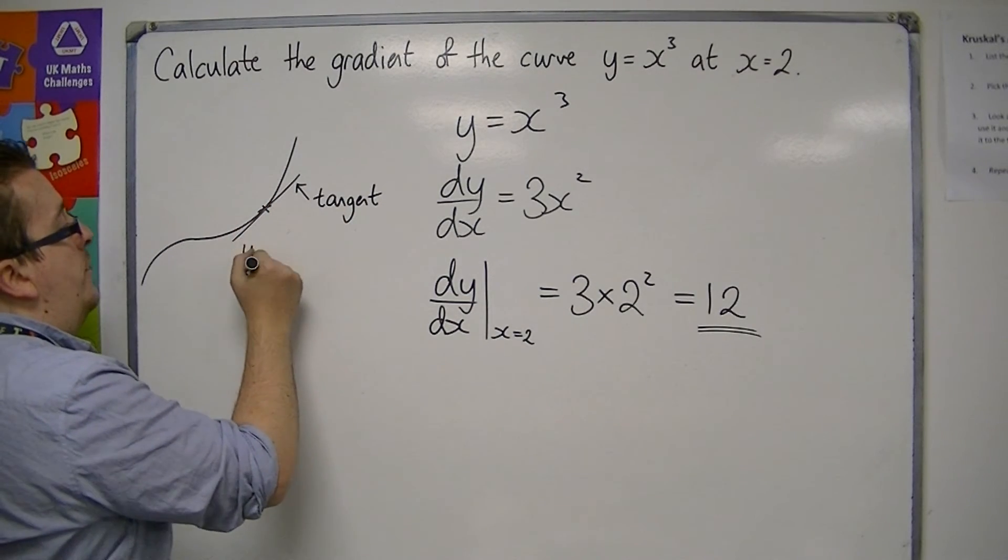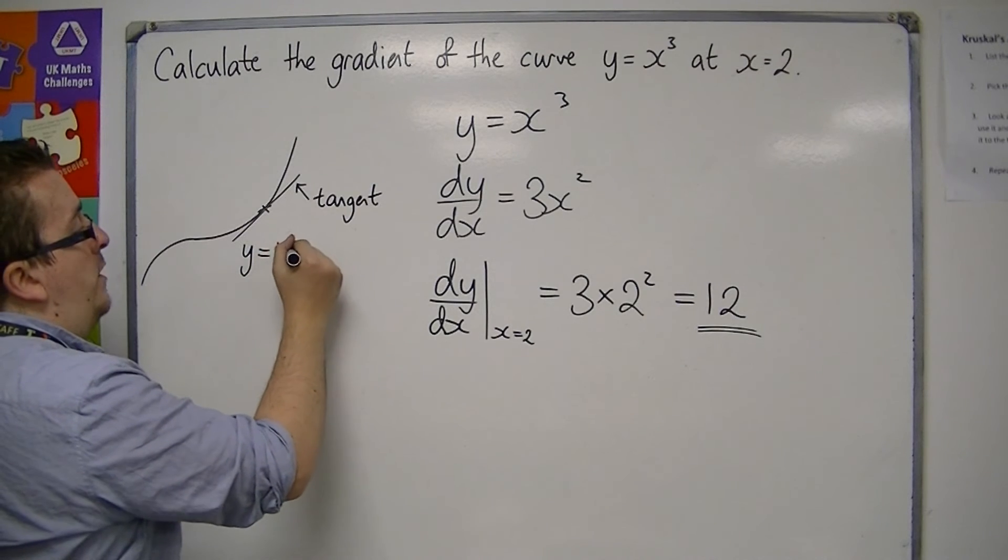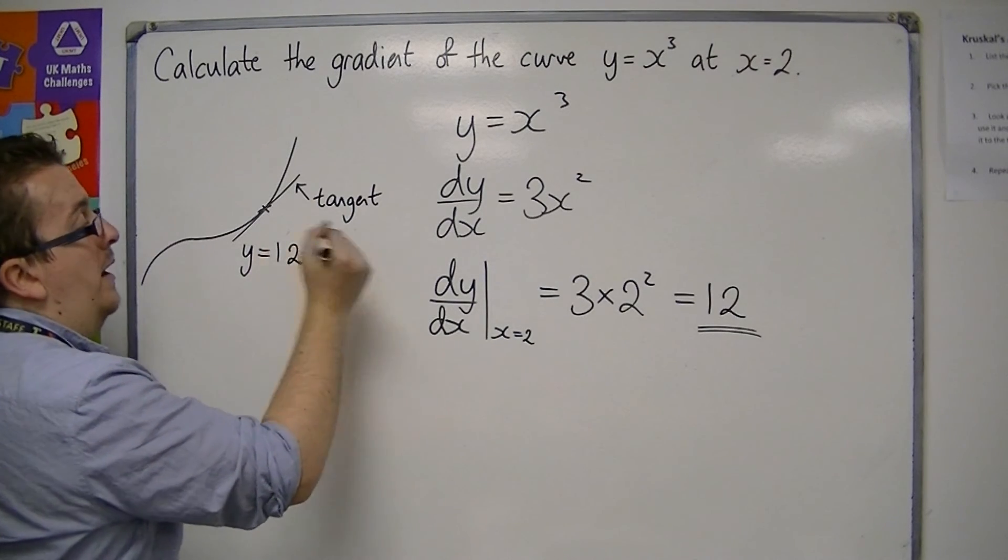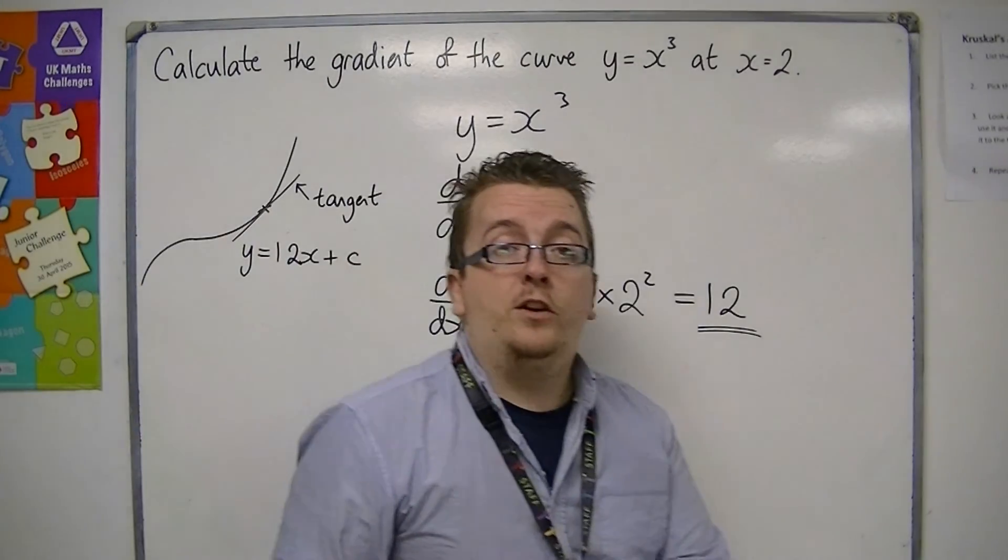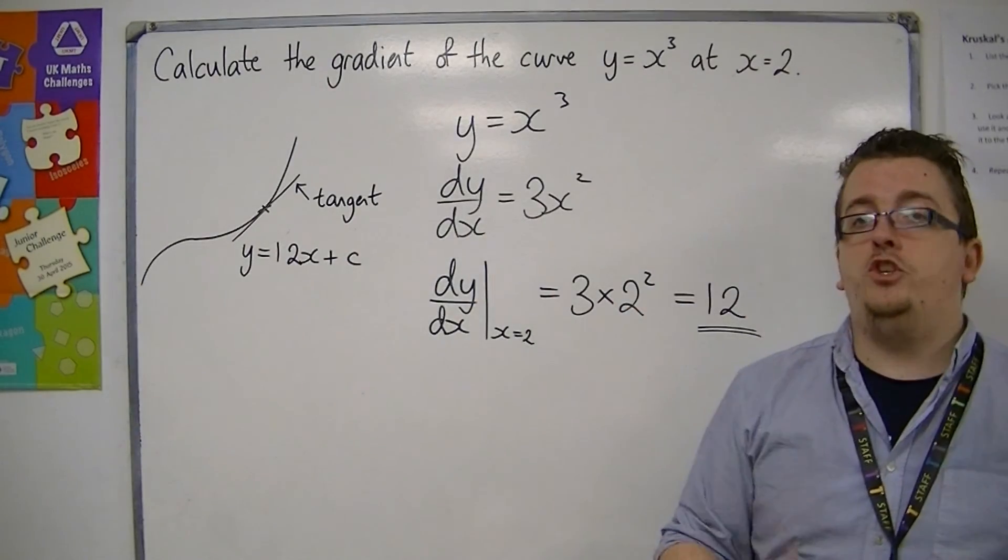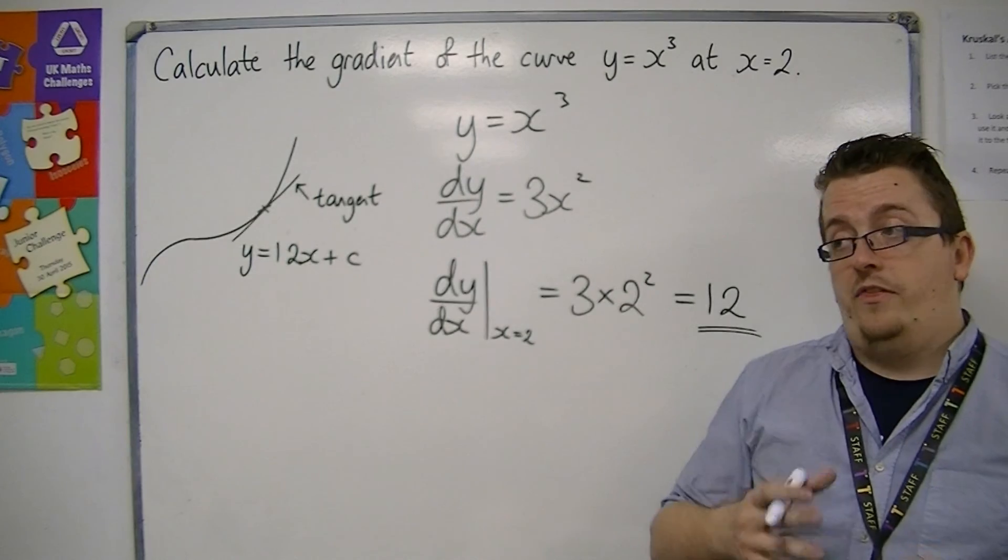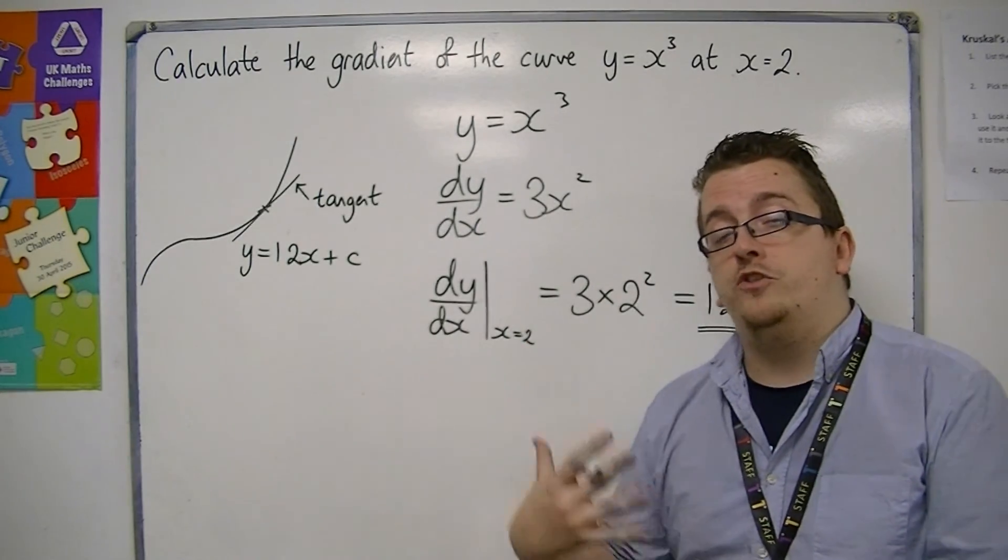So I now know that the equation of that tangent is y is equal to 12x plus something. And in the next video, we're going to look at how we can calculate the equation of the tangent, and then we will move on to the equation of the normal.